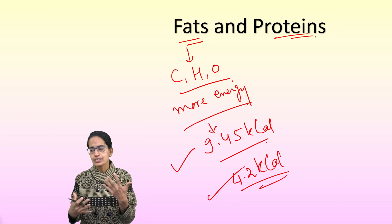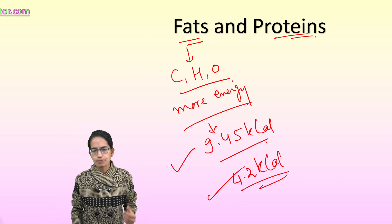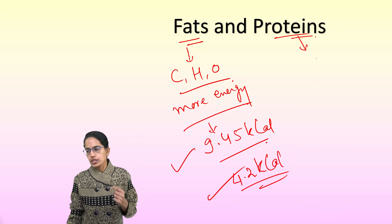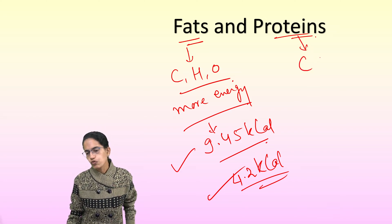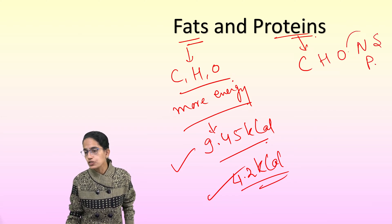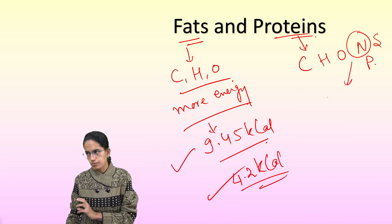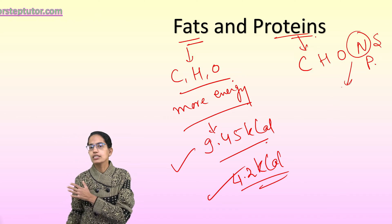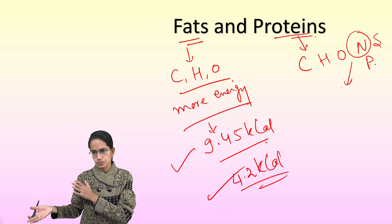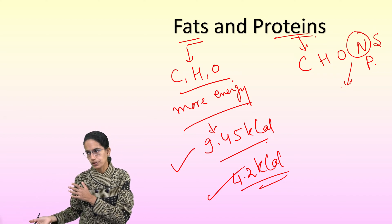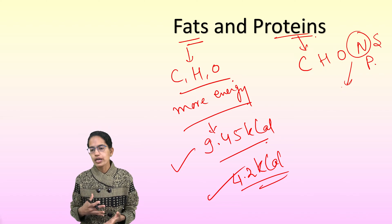Proteins are body-building food. They comprise carbon, hydrogen, oxygen, nitrogen, sulfur, and phosphorus — with nitrogen being the most essential. Amino acids are considered the building blocks of protein. Chains of amino acids combine to form dipeptides, then polypeptides, and finally the protein is synthesized. So amino acid is the basis for the formation of a protein molecule.